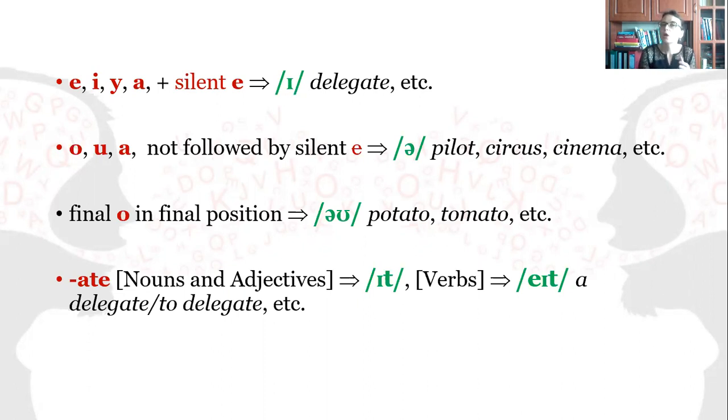The letters O, U, A, when they are not followed by silent E, are reduced to schwa, as in pilot, circus, cinema. The final O in final position is always pronounced as O, potato, tomato.